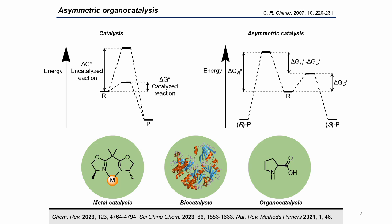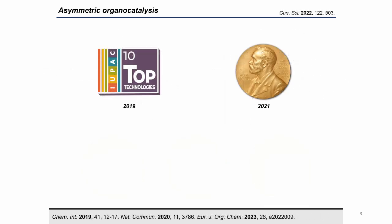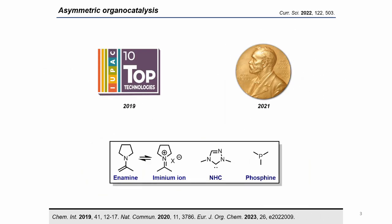In recent years, the high potential of asymmetric organocatalysis was highlighted by the IUPAC, including it in the Top 10 Emerging Technologies in Chemistry in 2019, and by the Royal Swedish Academy of Science through the Nobel Prize awarded to David MacMillan and Benjamin List in 2021. Many people also acknowledge Carlos Barbas' contribution to antibody-mediated catalysis as one of the key precursors of asymmetric organocatalysis. In this episode, we will focus on selected examples in enamine and iminium ion catalysis, N-heterocyclic carbenes, and phosphine organocatalysis.